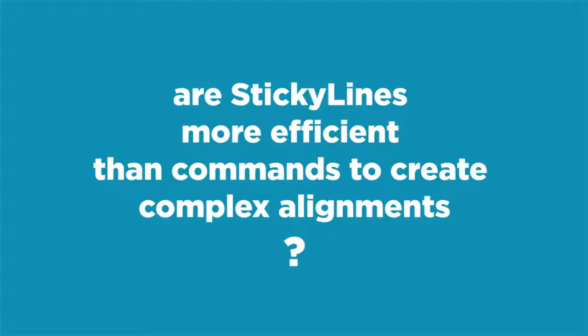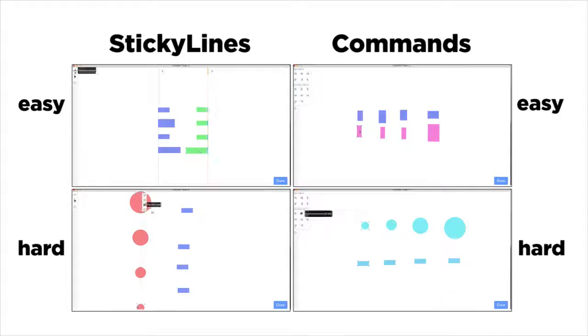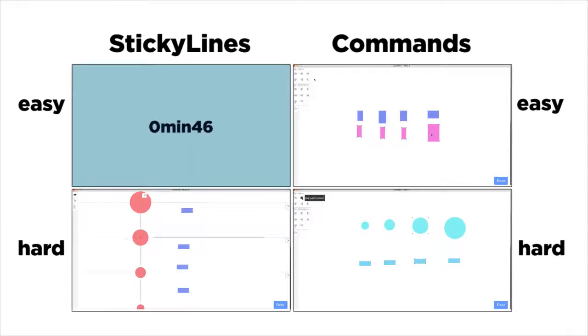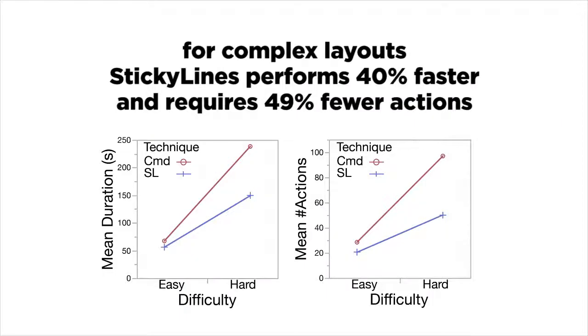We ran a control experiment to assess the efficiency of sticky lines. We compared sticky lines with traditional alignment commands for two levels of difficulty, easy layouts and hard layouts. The results show that for complex layouts, sticky lines are up to 40% faster and require 49% fewer actions.